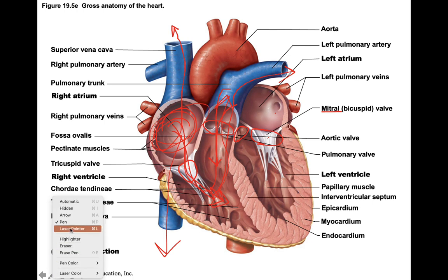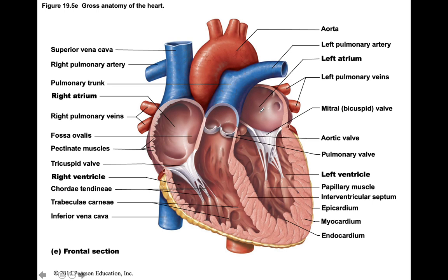So what I want to do one more time is go through the blood flow of the heart — this is my second time going through this because it's very important for your exam. Blood enters through the superior vena cava and the inferior vena cava into the right atrium. From the right atrium, it passes through the tricuspid valve into the right ventricle. From the right ventricle, it passes through the pulmonary semilunar valve into the pulmonary trunk and out of the left and right pulmonary arteries to the lungs, to drop off carbon dioxide and pick up oxygen. After picking up oxygen, that blood comes back toward the heart through the left and right pulmonary veins.